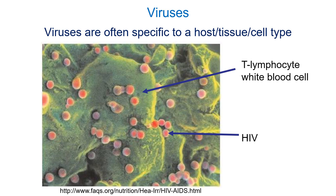Viruses tend to mutate fairly rapidly, giving rise to new strains on short timescales. Changes to the genetic code affect the structure of N and H proteins, resulting in influenza strains with unique characteristics — they might be able to infect cell types or organisms they couldn't before. Viruses are often very specific about what species and cell types they can infect, because they bind to surface proteins that are specific to certain organisms or cell types. HIV, for example, binds to proteins specific to T lymphocytes, part of the immune system.